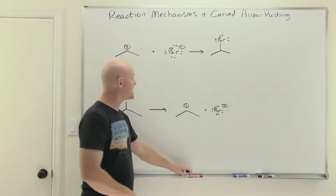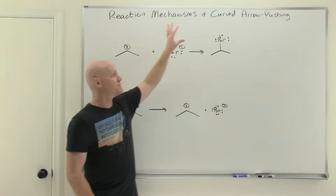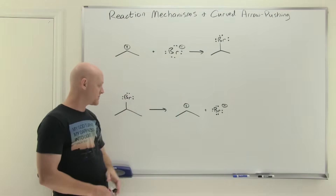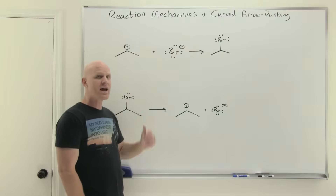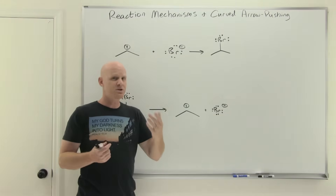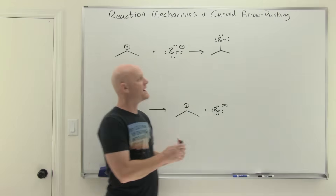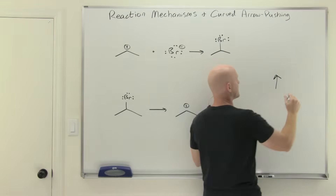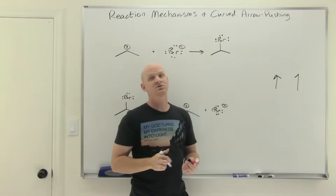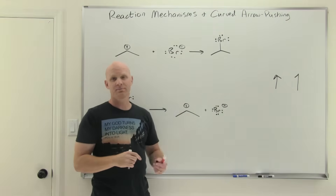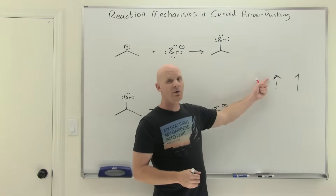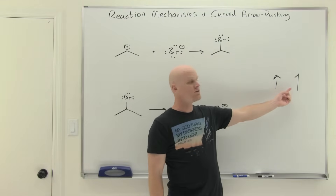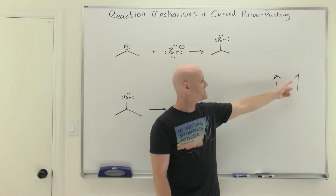So let's take a look at the first couple of examples. We'll be given reactants and products and have to fill in the curved arrow pushing that shows how to get from reactants to products. These curved arrows show the movement of electrons. A double-headed arrow shows the movement of two electrons, whereas a half-headed arrow shows the movement of one electron at a time — and that distinction will be important. Most of the time we'll deal with two-headed arrows moving two electrons at a time.